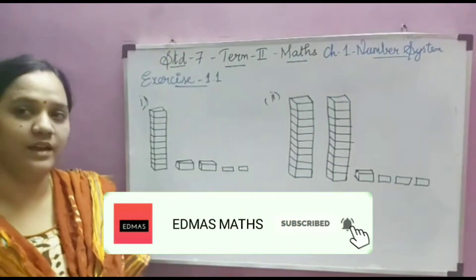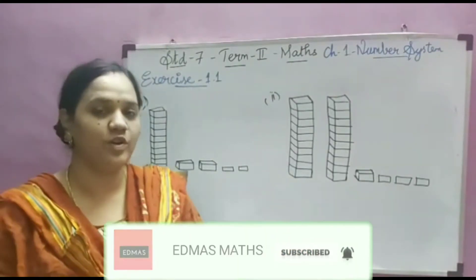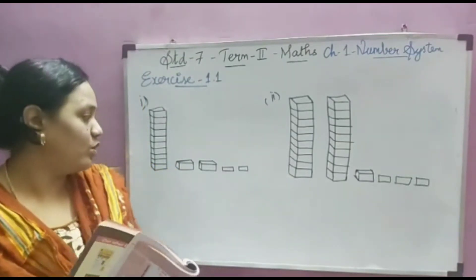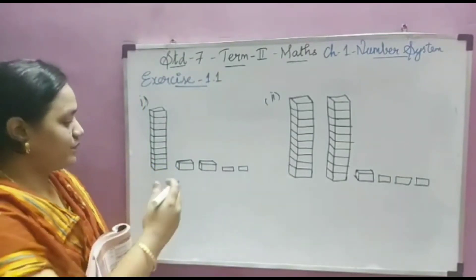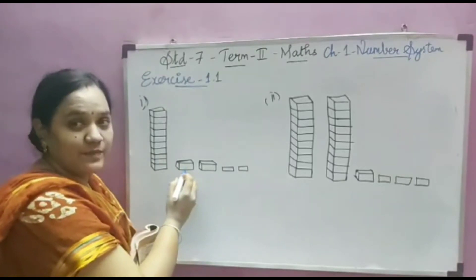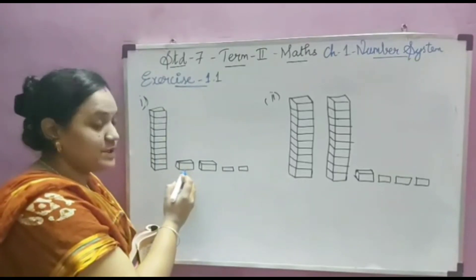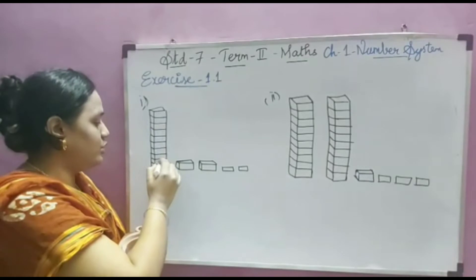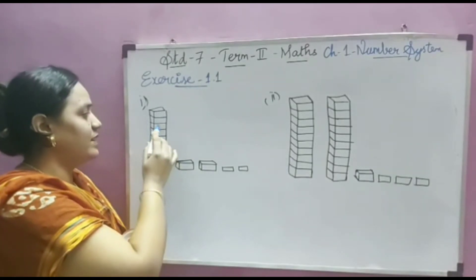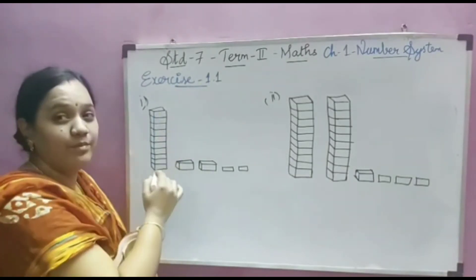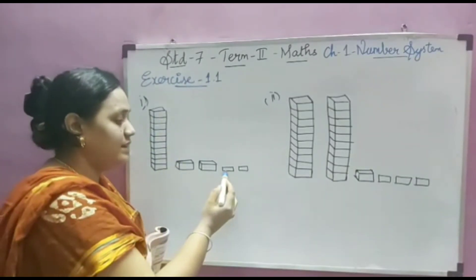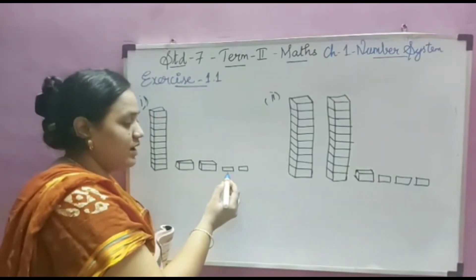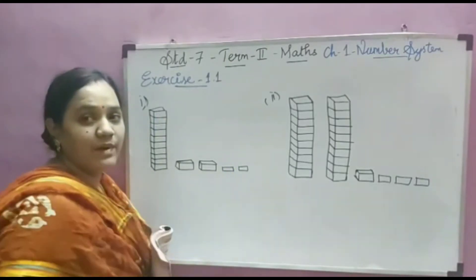Already in my previous video I explained about place values. So here, this is the ones place value — that is the units box. And this is the tens, with 10 boxes, and here this slide-like structure — that is your decimal part.